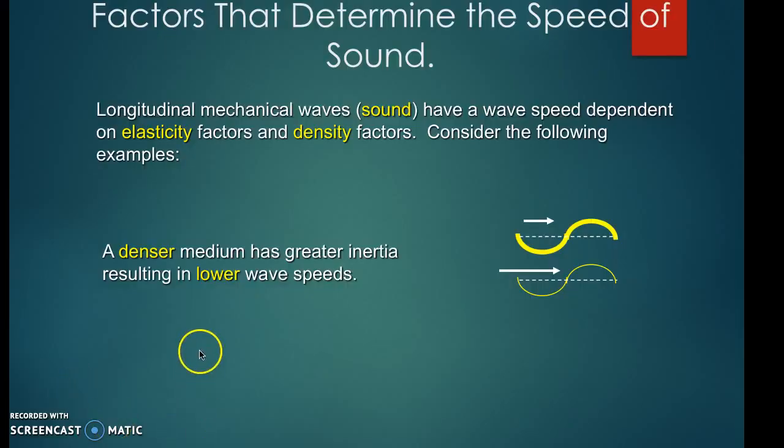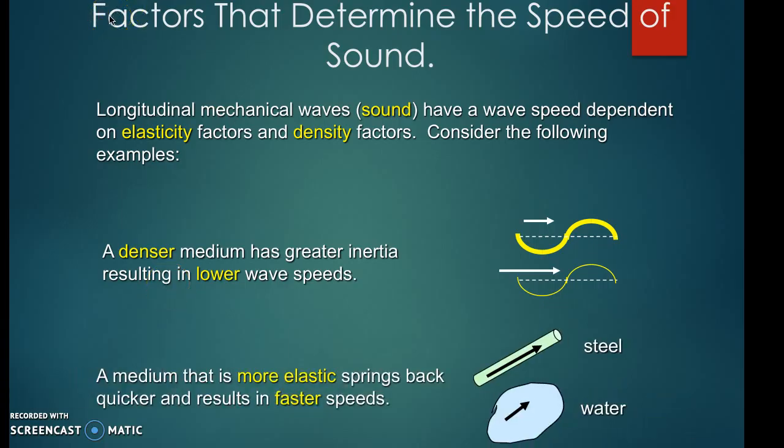Sound travels at speeds depending on the properties of the medium it's traveling through. Traditionally we say that the speed of sound in air is somewhere around 343 meters per second. But it really depends on the properties of the air and the material. Air changes if the temperature is warmer, the temperature is cooler, if there's more humidity. Those properties affect how fast sound could move in air.